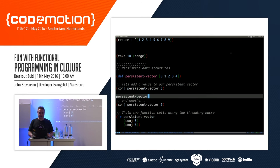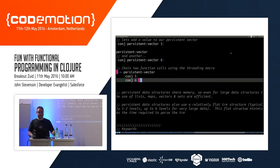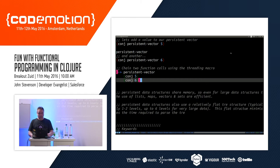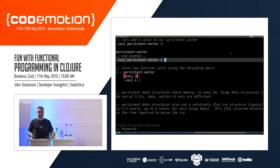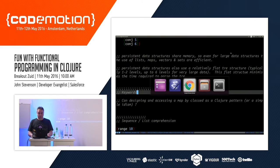If we take the persistent value and add six to it, we get zero to four and then six, but again we haven't changed the underlying data structure. Using the threading macro, we can `conj` five and six together onto `persistent-vector` and get a data structure of zero to six — but the original zero to four is still untouched. You can pass information around inside Clojure without affecting other aspects of your code.